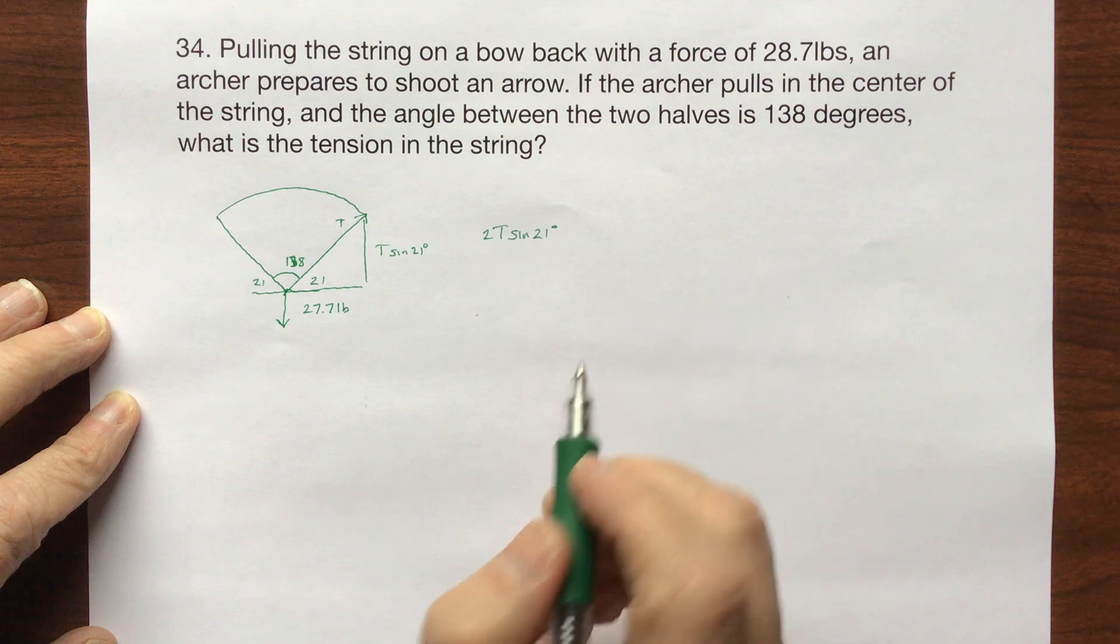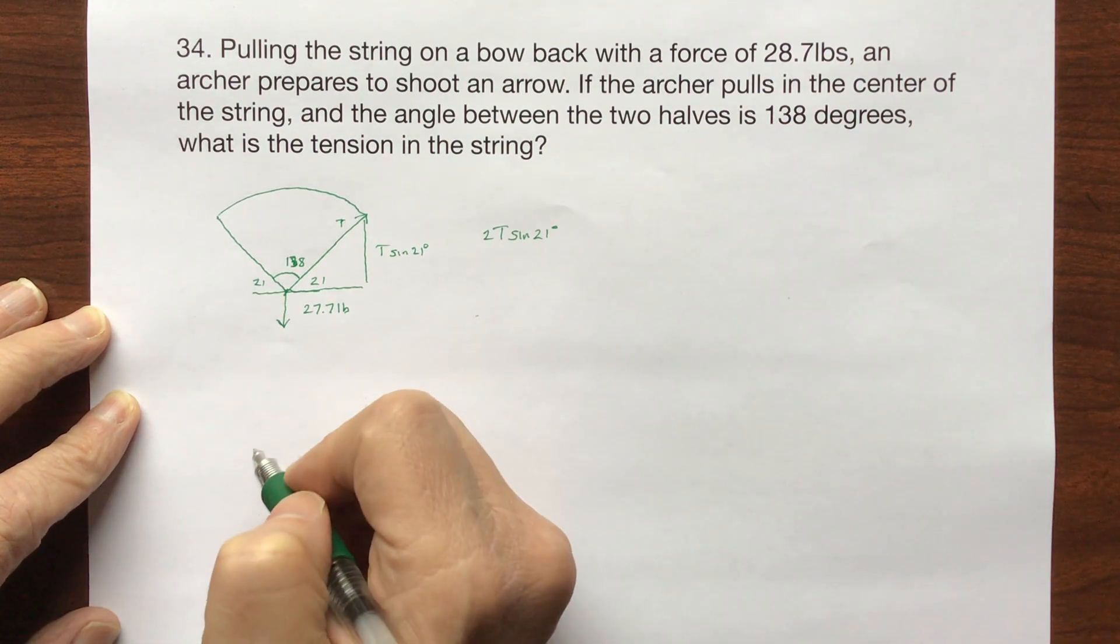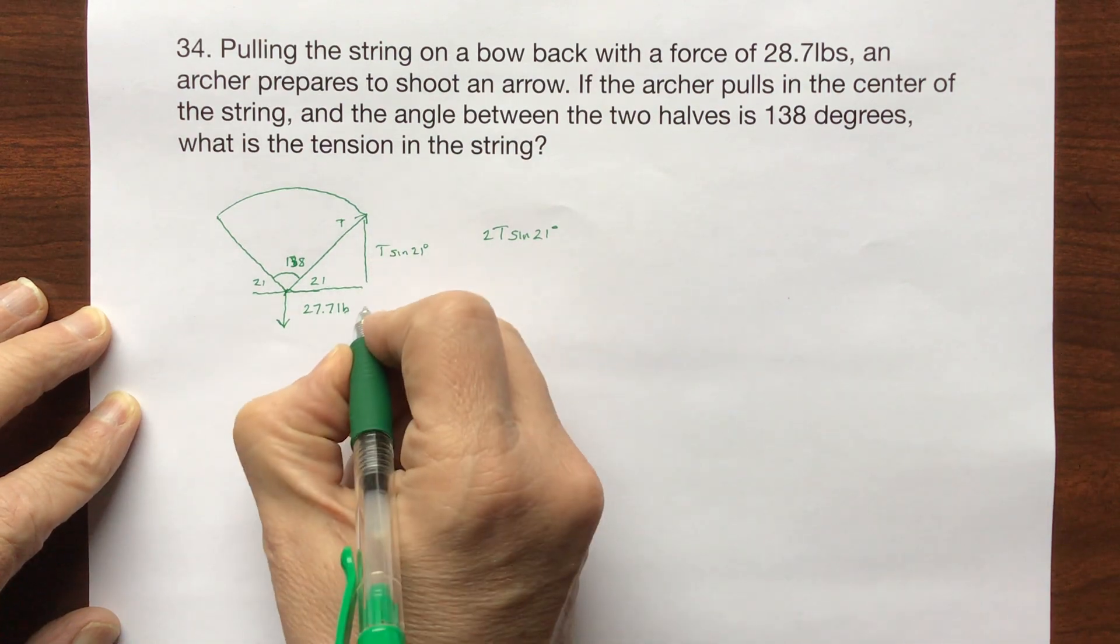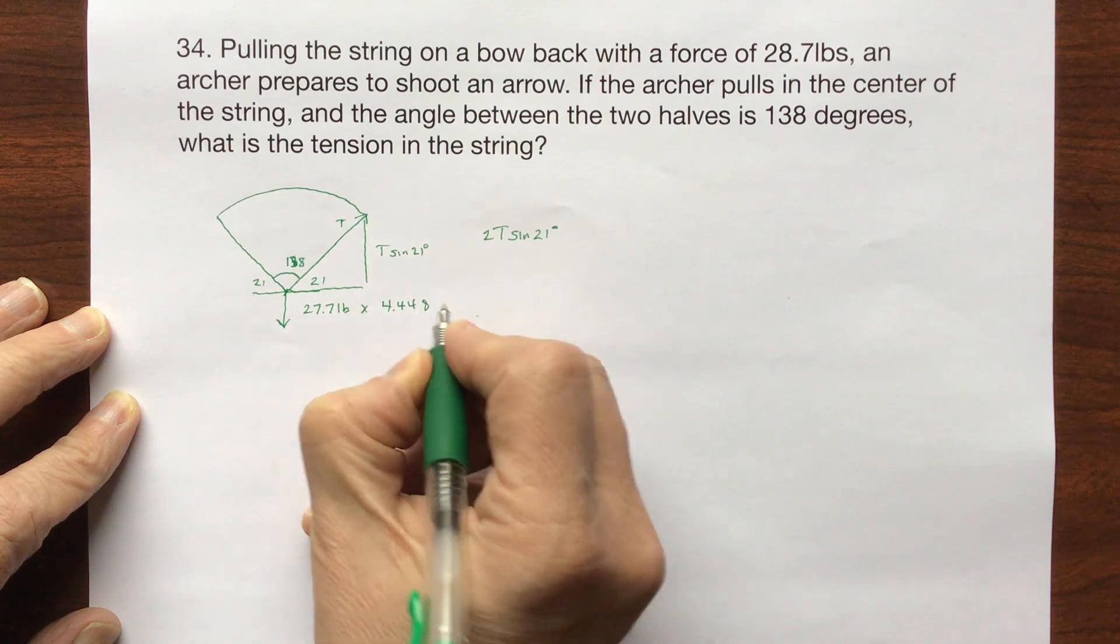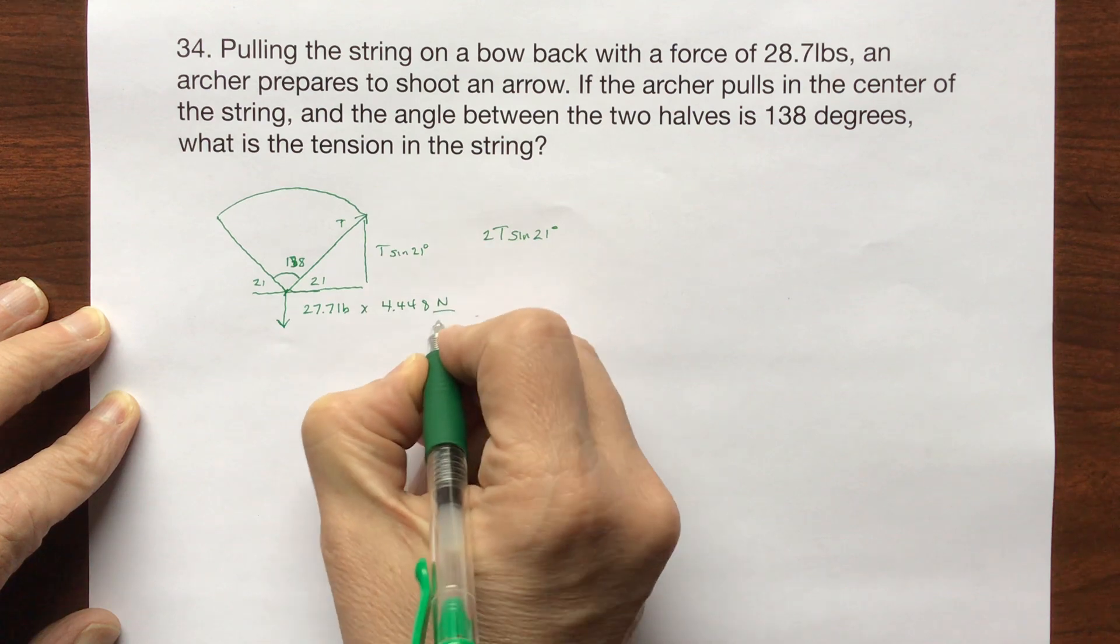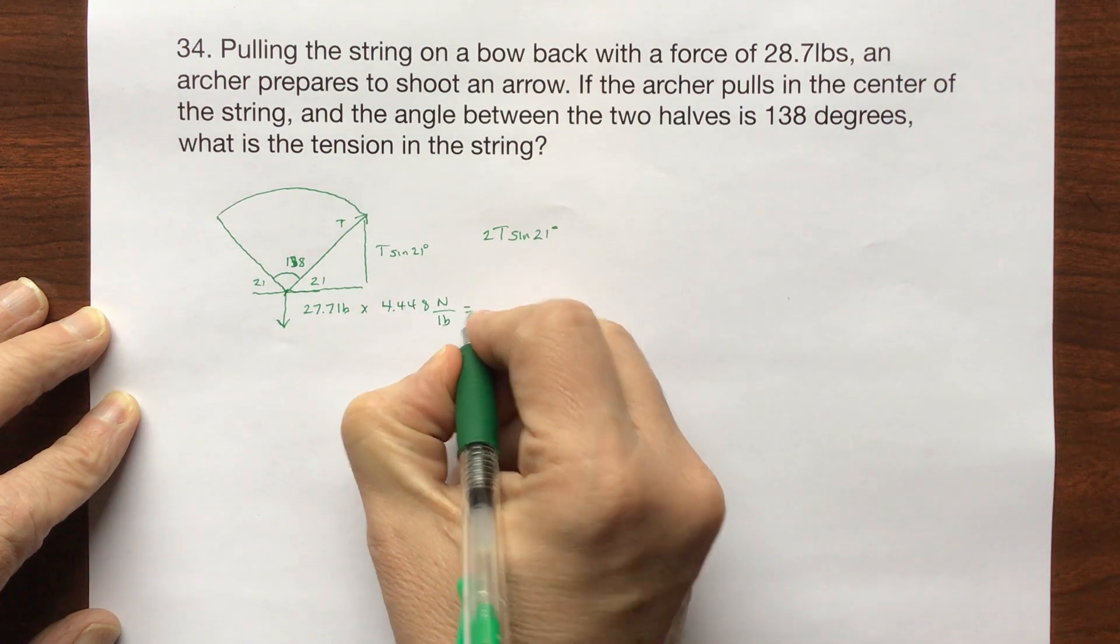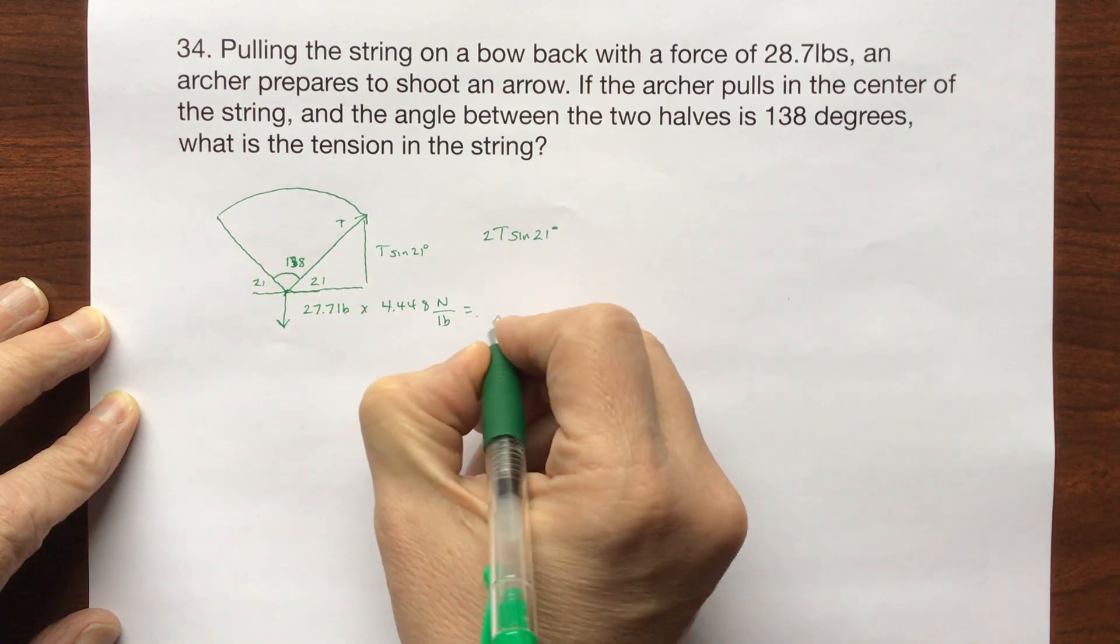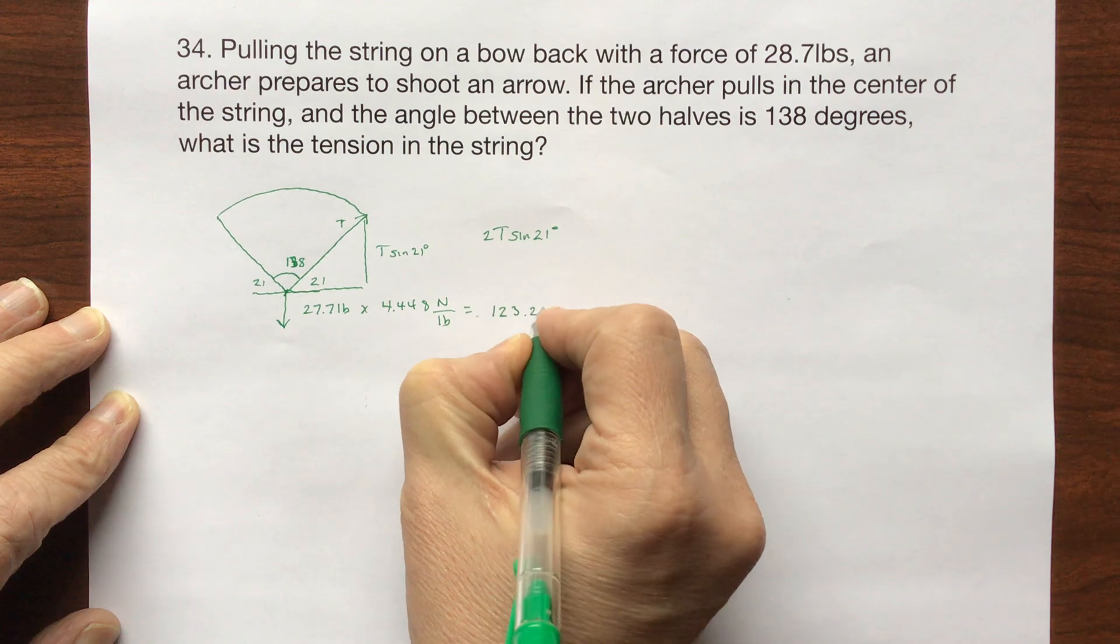I need to know what the force is here and I've got it in pounds and I need that in newtons. So I looked this up and found that there are 4.448 newtons per pound. So when I multiply that out, I get that this force of pull is equal to 123.2 newtons.